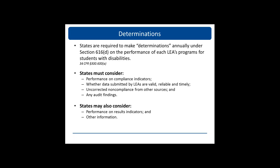Federal regulations require us to make annual determinations on the performance of LEA's programs for students with disabilities. The following items must be considered when doing so: performance on compliance indicators, whether data submitted by LEAs are valid, reliable, and timely, uncorrected noncompliance from other sources, and any audit findings. Additionally, we may also consider performance on results indicators, as well as other information.